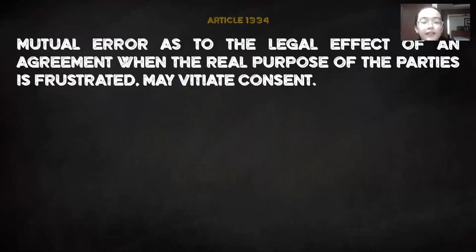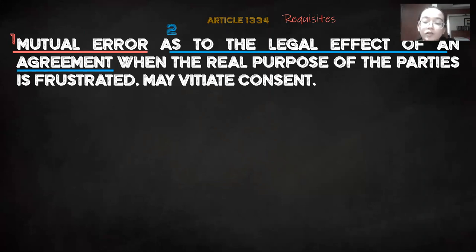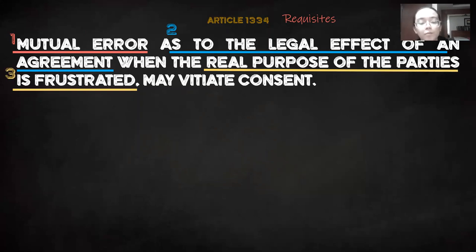And the last article for this video, we have Article 1334, which provides that mutual error as to the legal effect of an agreement when the real purpose of the parties is frustrated may vitiate consent. Previously in Article 1330, I discussed about the nature of mistake, which can be unilateral or bilateral. Here we are discussing about mutual mistake. The requisites for the application of Article 1334 are: first, the mistake must be mutual; second, the mistake must refer to the legal effect of an agreement; and lastly, the mistake must frustrate the real purpose of the parties. Take note, the requisites are a must.